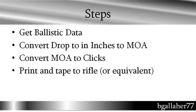You estimate your range, you look on a cheat sheet that's typically taped to your rifle, and you adjust your scope to the number of clicks. What I like to do is print off that cheat sheet and then tape it to the rifle buttstock. When I'm out hunting, if I have time, I can look at the cheat sheet, adjust the scope, and take the shot.